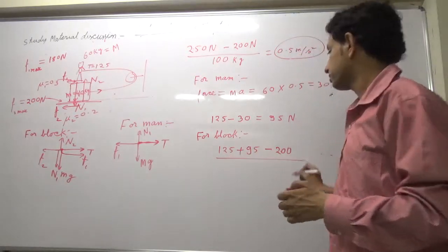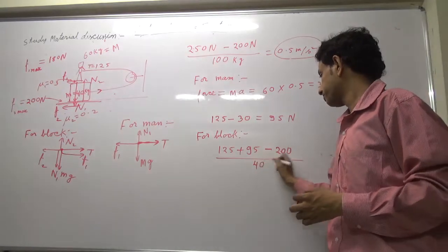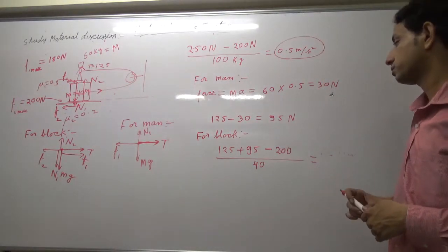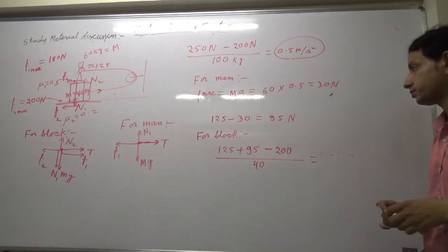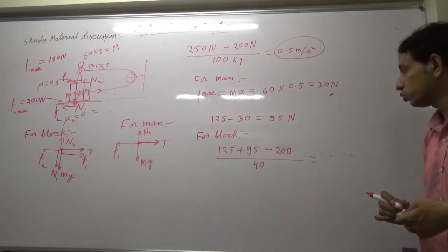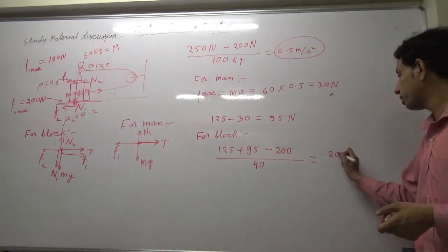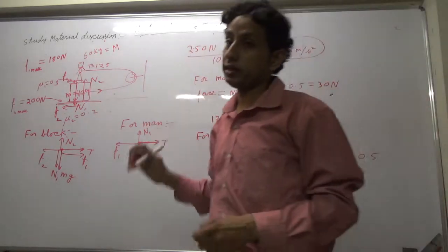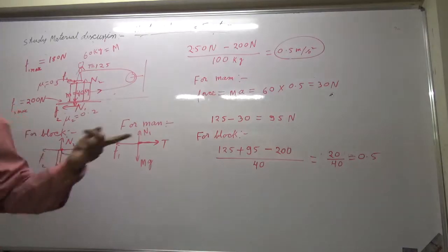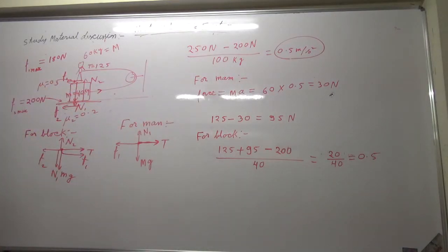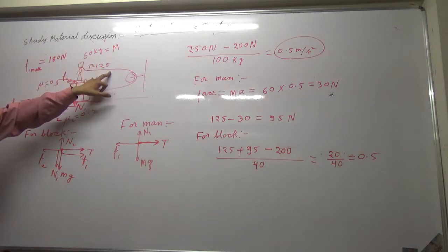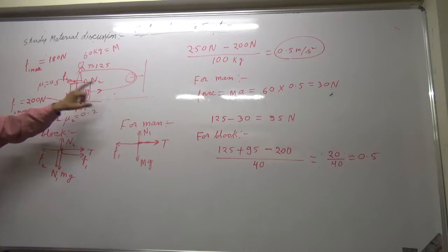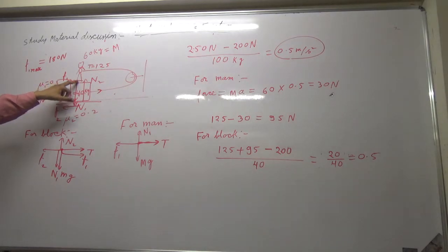Different forces are 125, 125, friction 200, and 95. Now check the options. B will slide on the ground? Yes. A and B will move with acceleration 0.5? Yes.